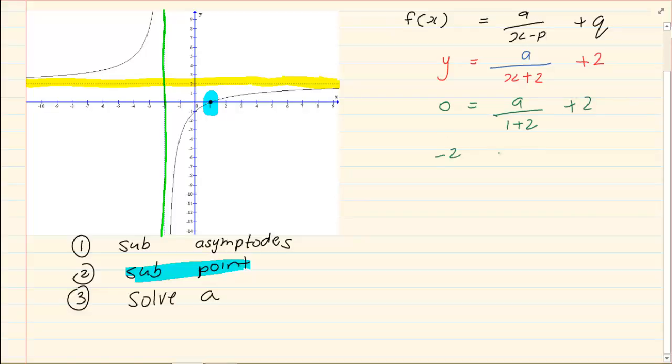Bring my 2 over. I got minus 2 is equal to a over 3. If I multiply I've got minus 6 is equal to a. Can you see?